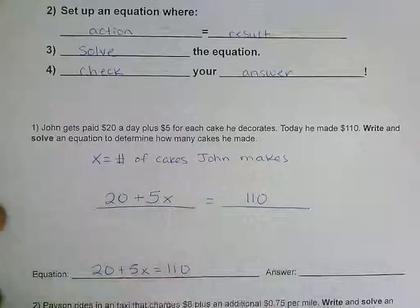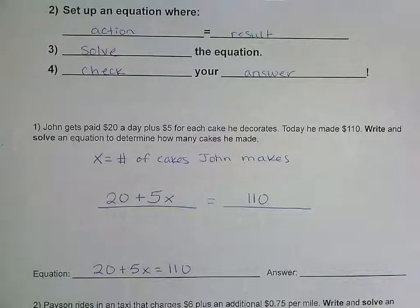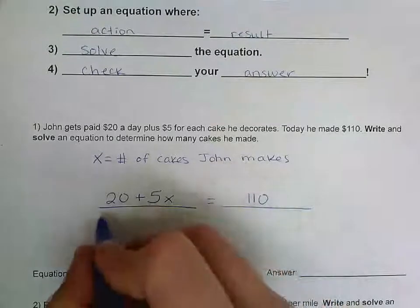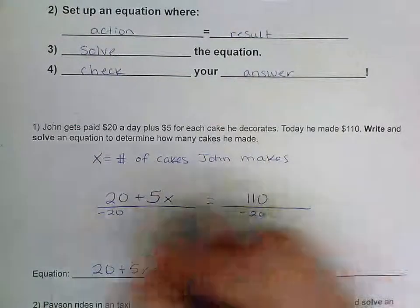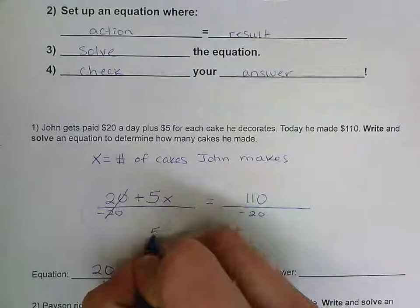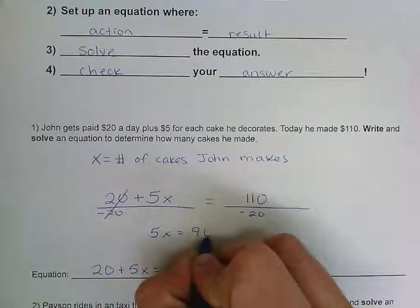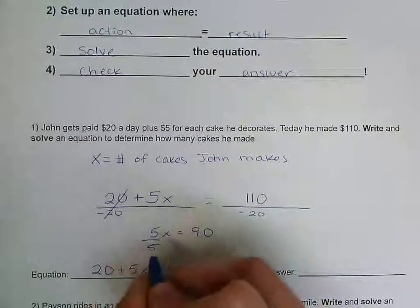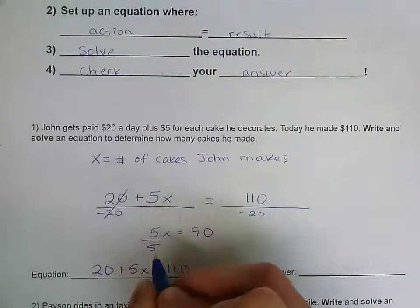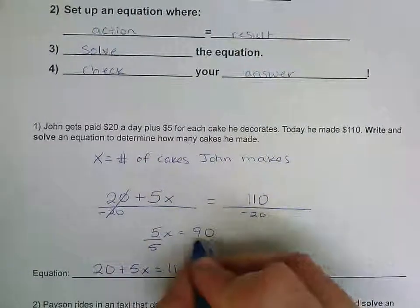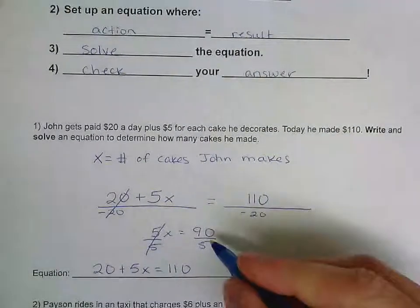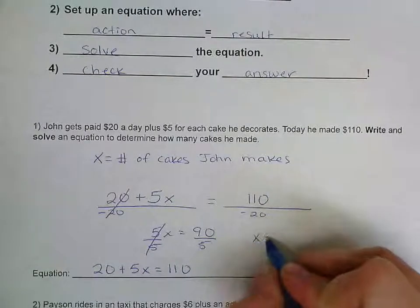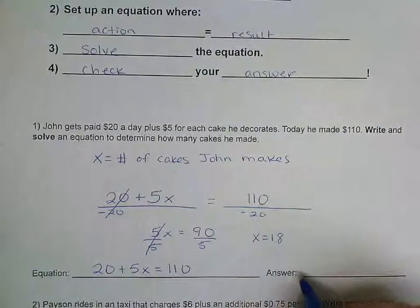Our equation is 20 plus 5x equals 110. To solve, we subtract 20 from both sides — that cancels, leaving 5x equals 90. Then we divide both sides by 5, which cancels out, and we end up with x equals 18. So the answer is 18 cakes.